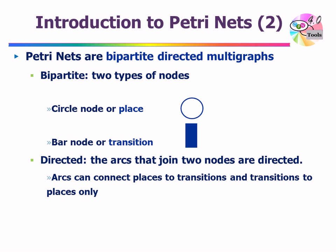The arcs can only connect places to transitions and transitions to places — you will not see an arc connecting two places or an arc connecting two transitions. The reason we call them multigraphs is that we can have multiple parallel arcs between a place and a transition. Some people may put a number on an arc that captures the multiplicity or number of parallel arcs between two nodes. Here is a small trivial example of a Petri Net structure: transition T1 is drawn as a rectangular box in the middle, with P1 as its input place and P2 as its output place.